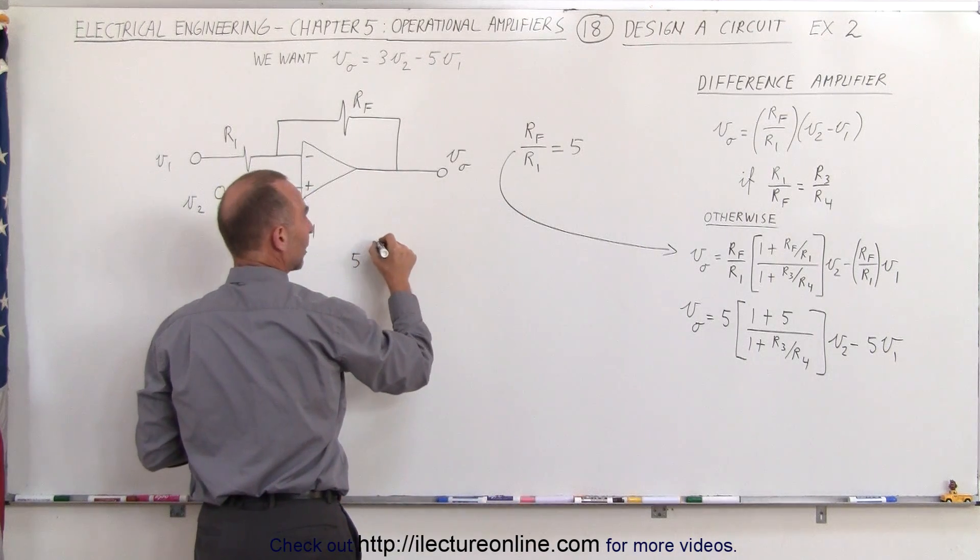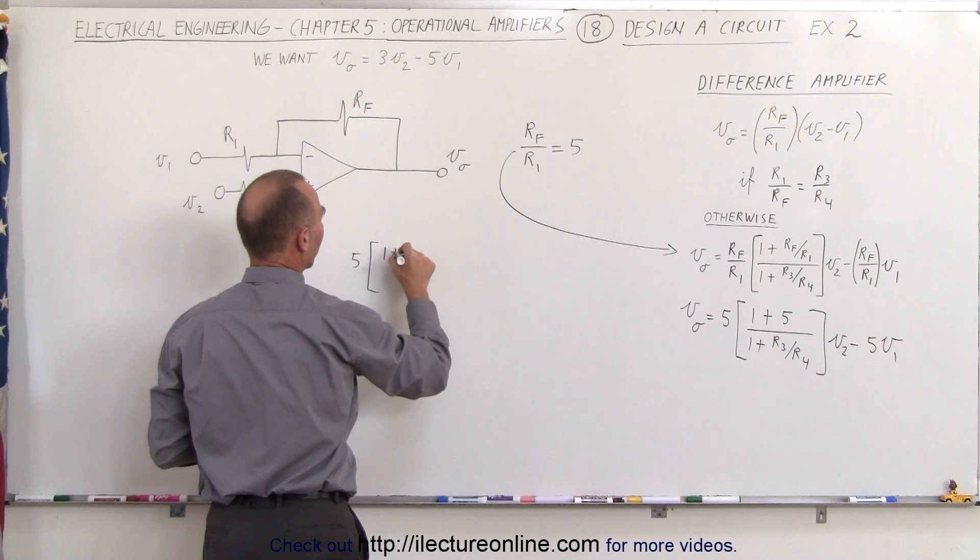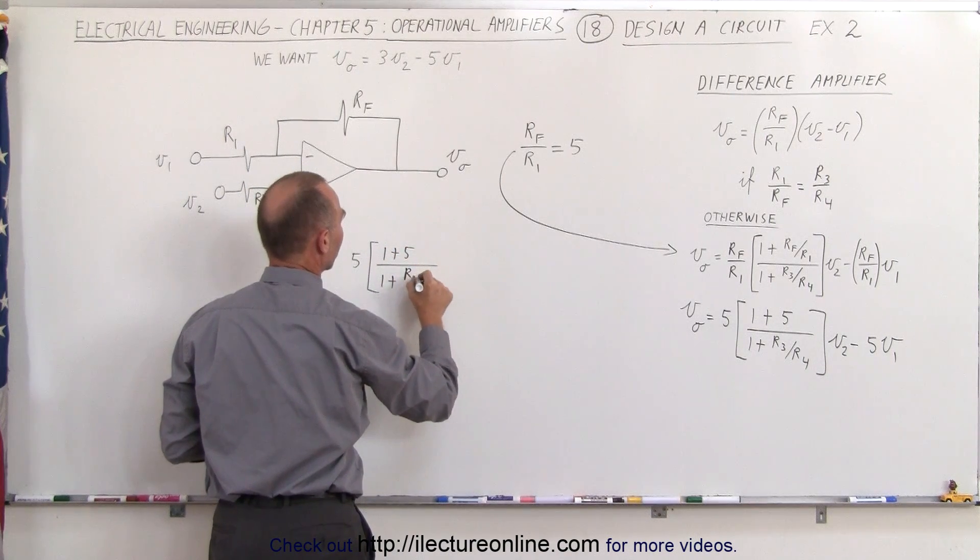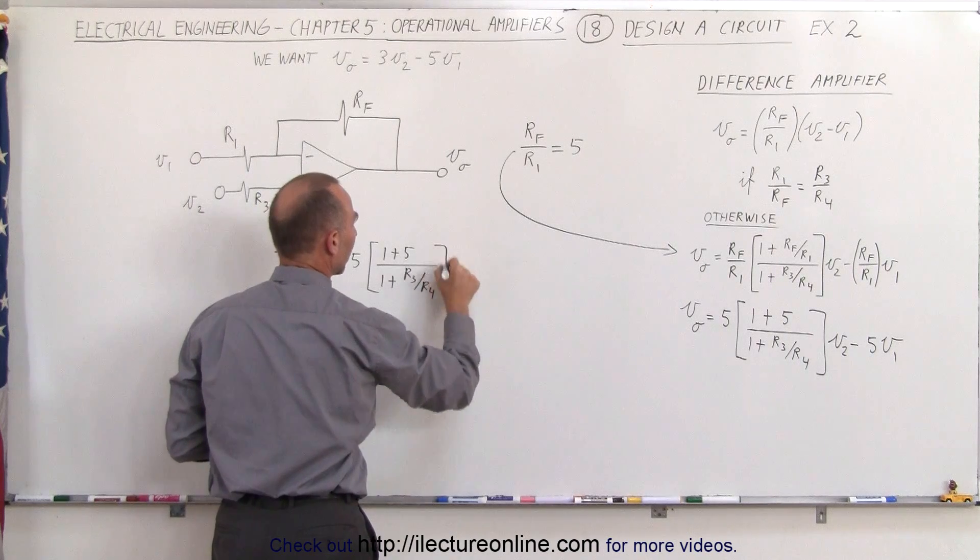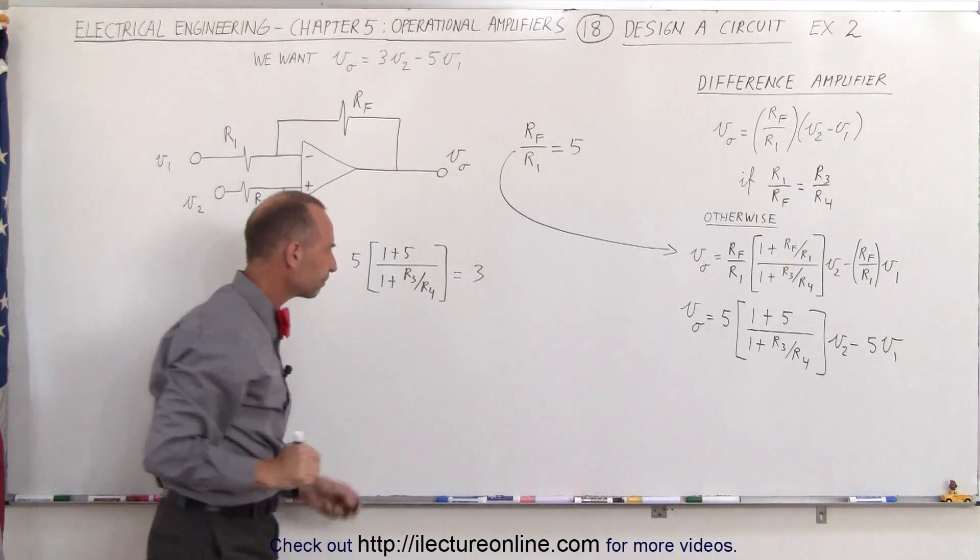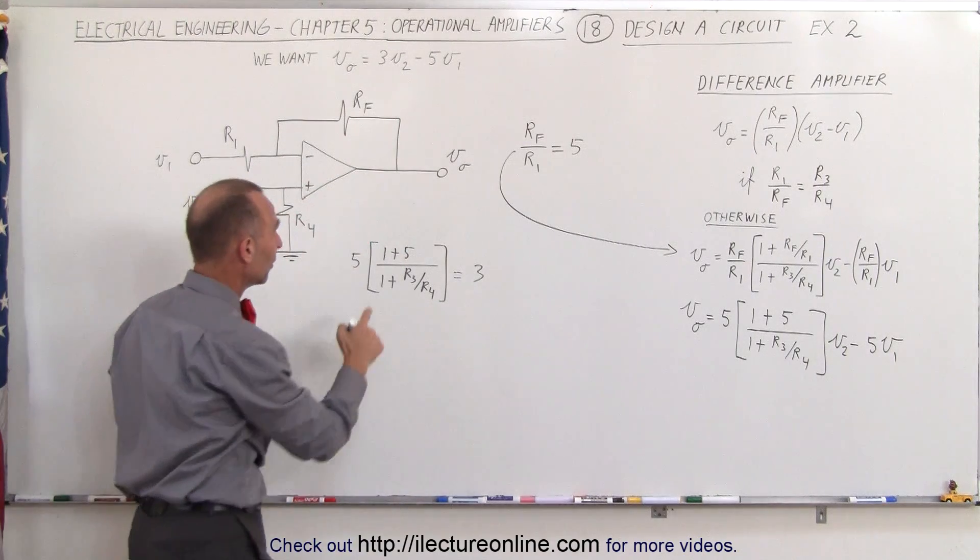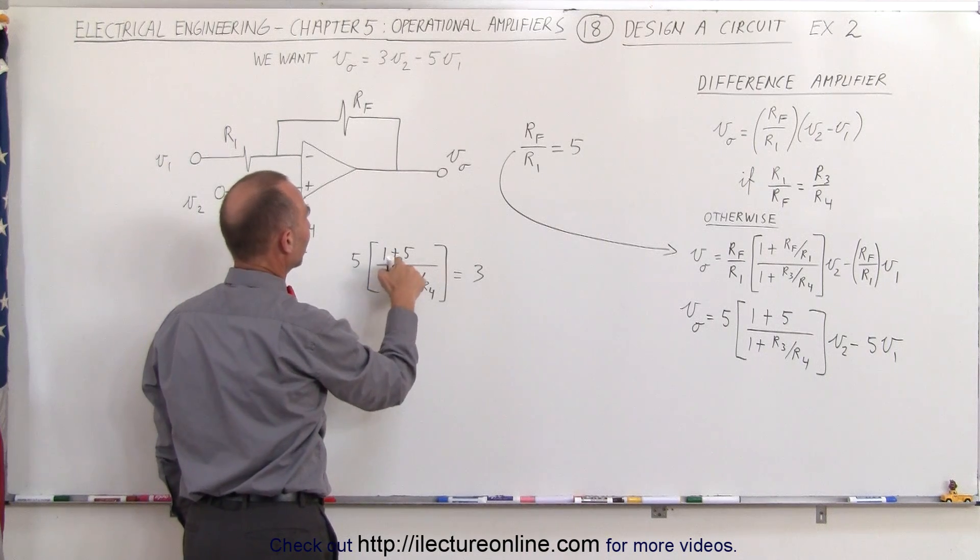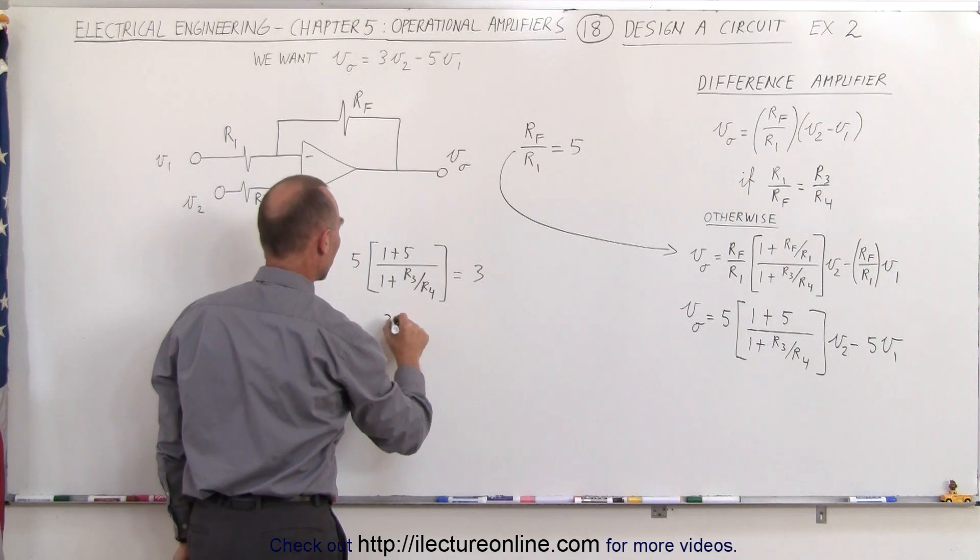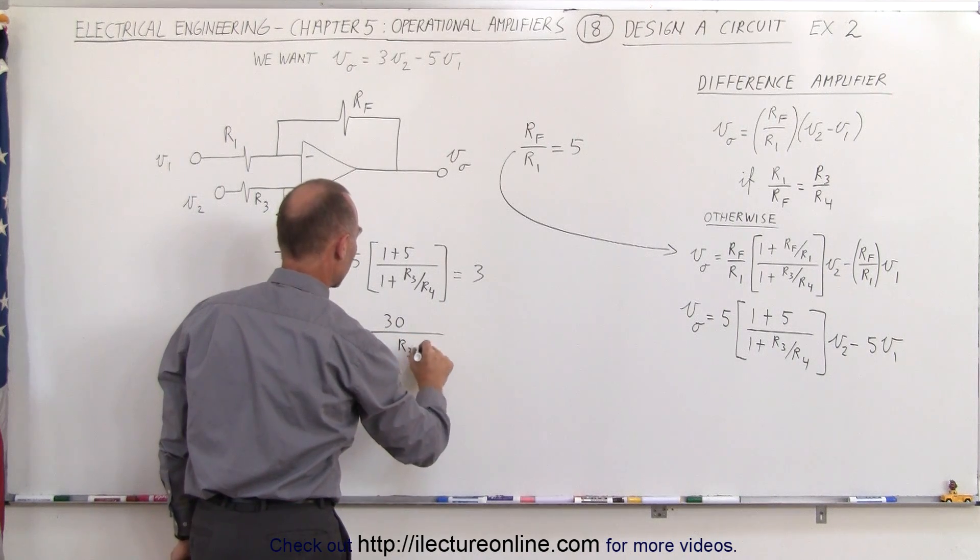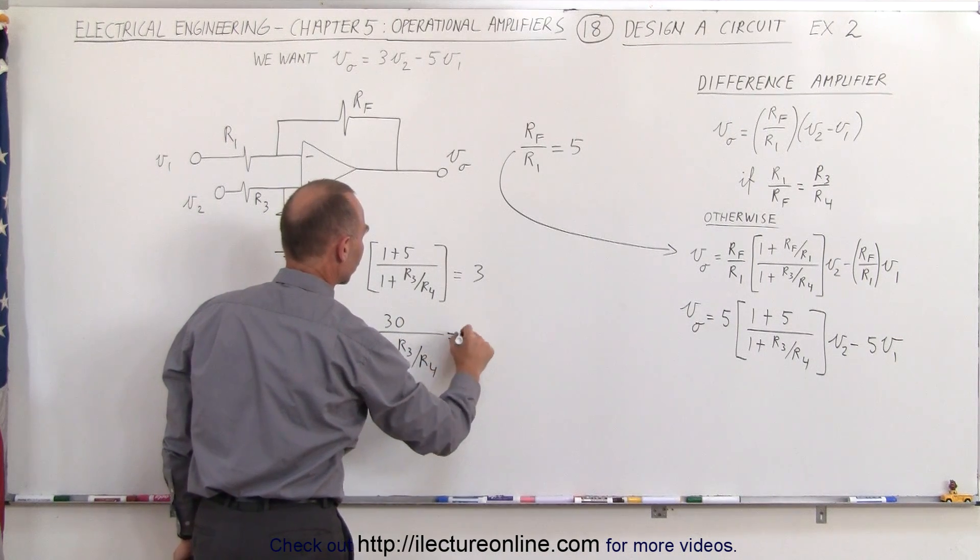We have 5 times 1 plus 5 divided by 1 plus the ratio of R3 divided by R4 and that has to equal 3, the number we're looking for over here. So let's simplify this and see what we get. We have 5 times 1 plus 5, well 1 plus 5 is 6 times 5 which is 30. We get 30 divided by 1 plus R3 divided by R4 is equal to 3.